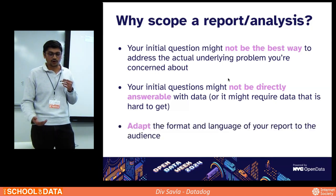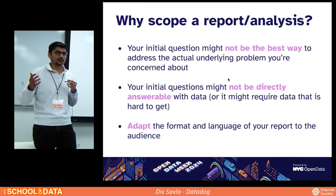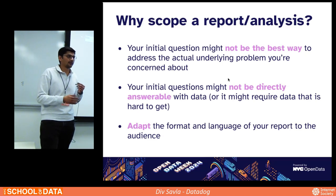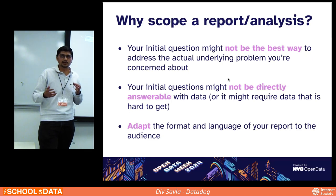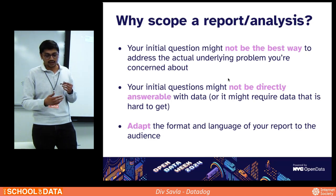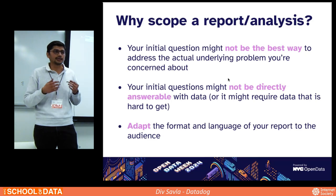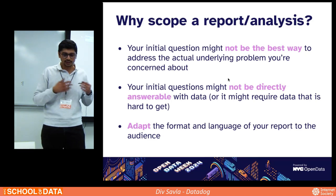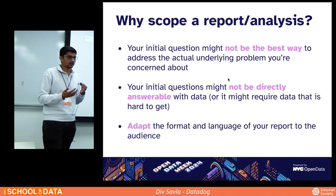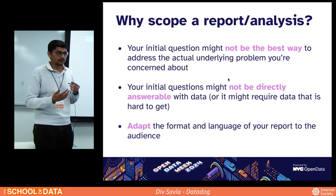The third reason for scoping is adapting to the format and language of your report. If you're presenting to C-level executives, you want your report to be high level. But if you're talking to a product manager, you want it to be super in-depth covering different technicalities. You also want to adjust for accessibility - if someone's colorblind or has other accessibility issues - to make sure the end product is usable and digestible by your stakeholders.